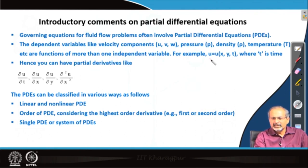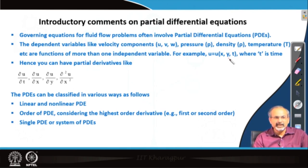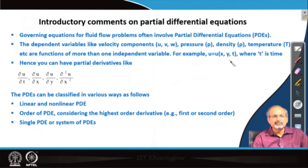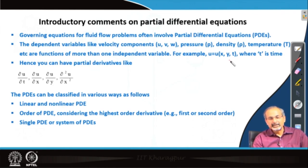Most often we find that these variables are dependent on a number of independent variables. For example, when I talk about the x component of velocity U, I may find that U is actually a function of a number of independent variables which are x, y, t, and could be more. Here it means we are interested in solving a flow problem involving two spatial directions x and y, which are orthogonal to each other, and additionally there is a dependence of U on time. So x, y, t are independent variables, while u, v, w, p, rho, T and others which carry information about the flow field are dependent variables.